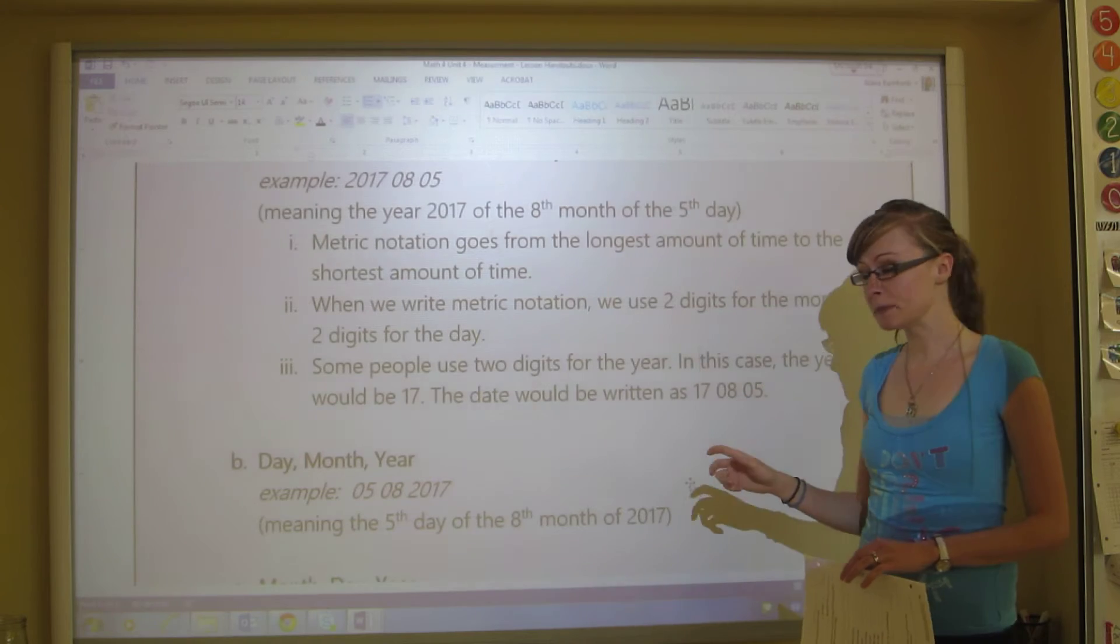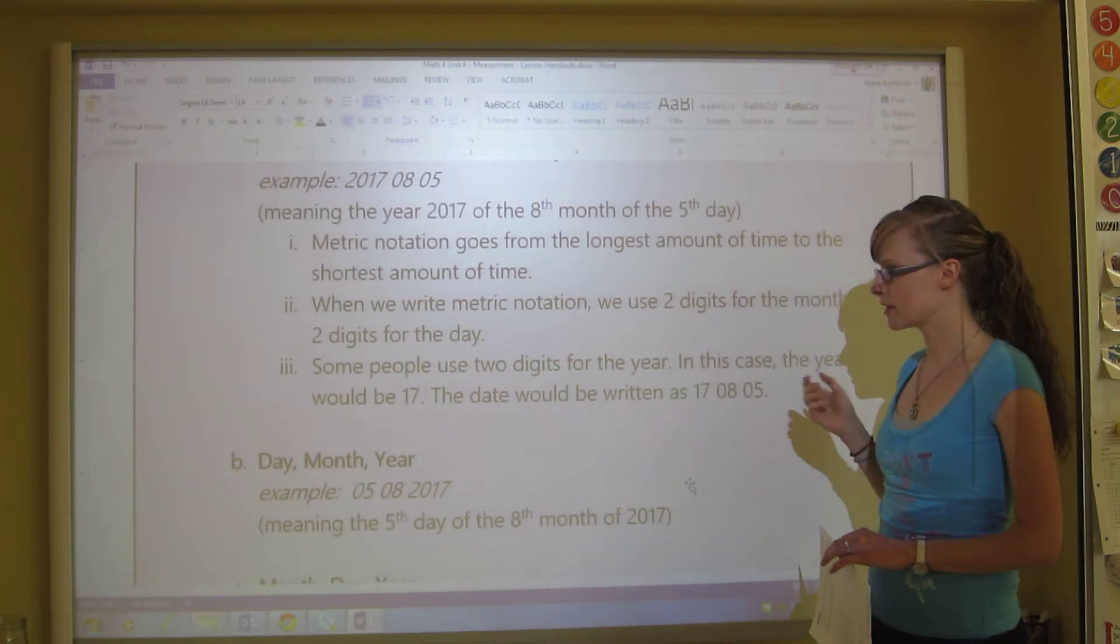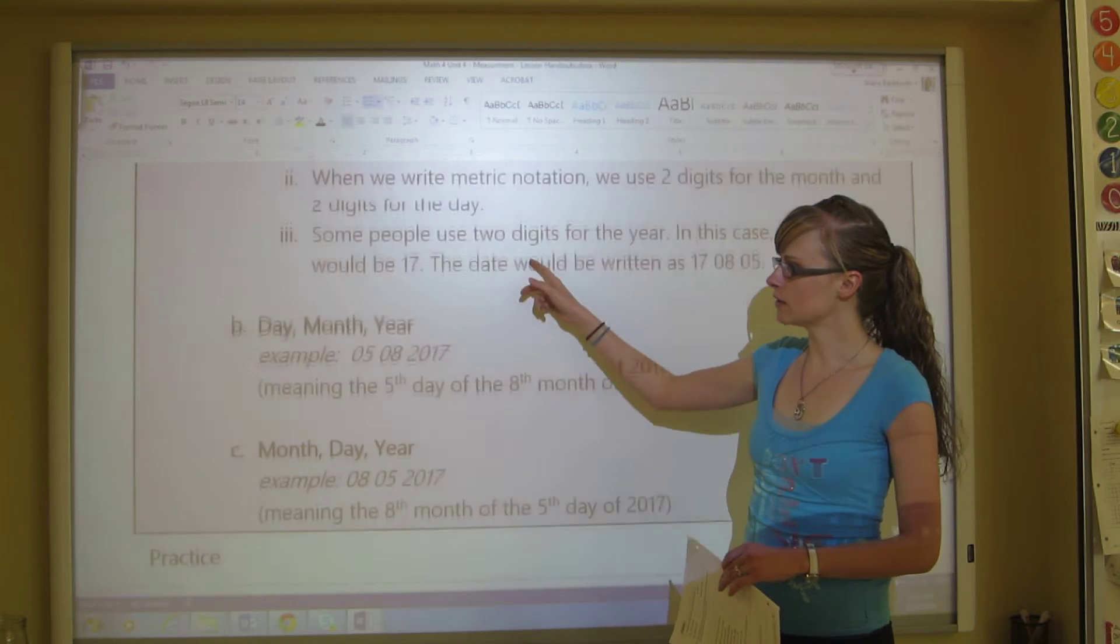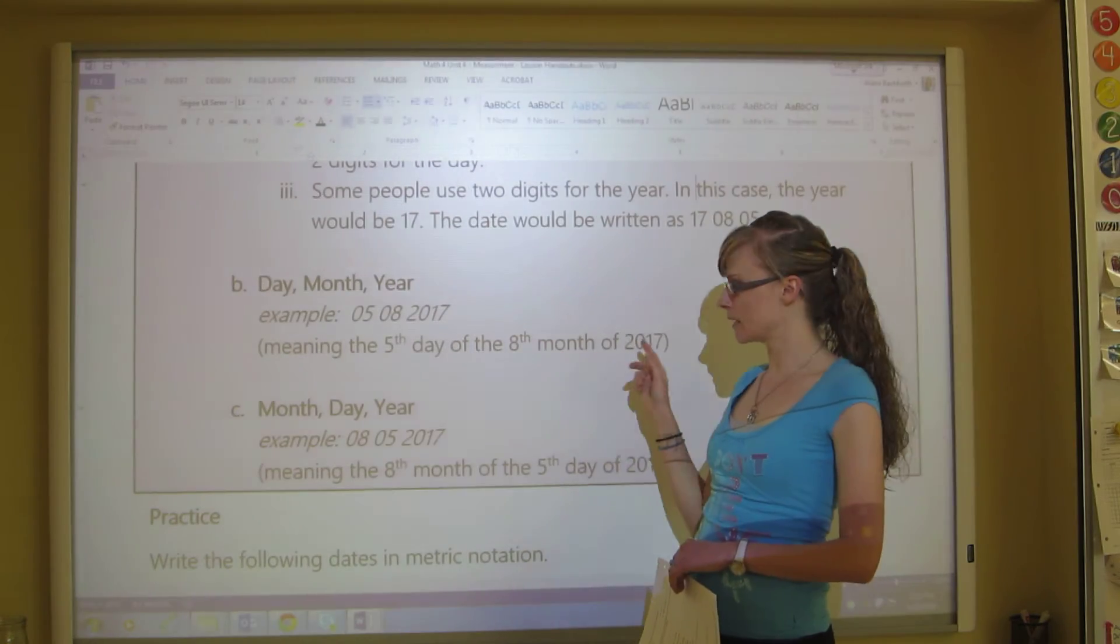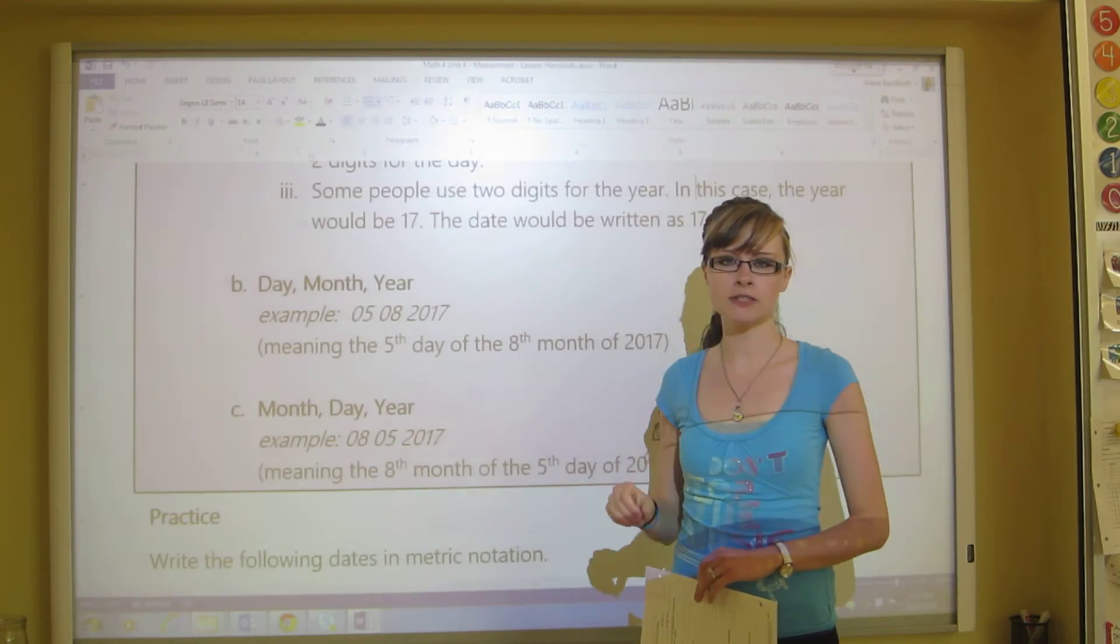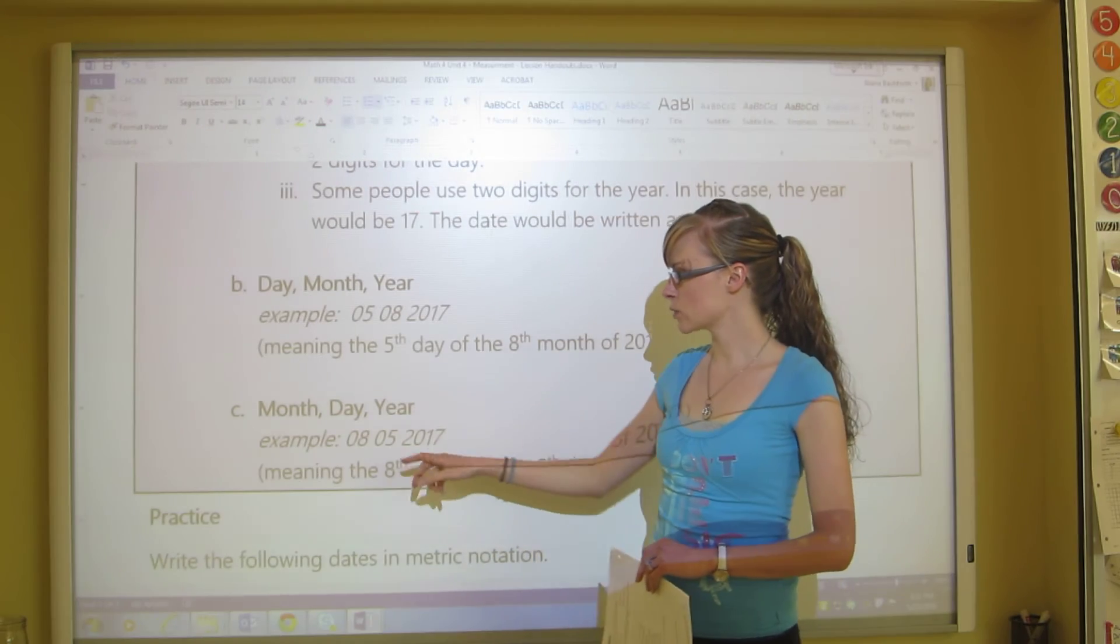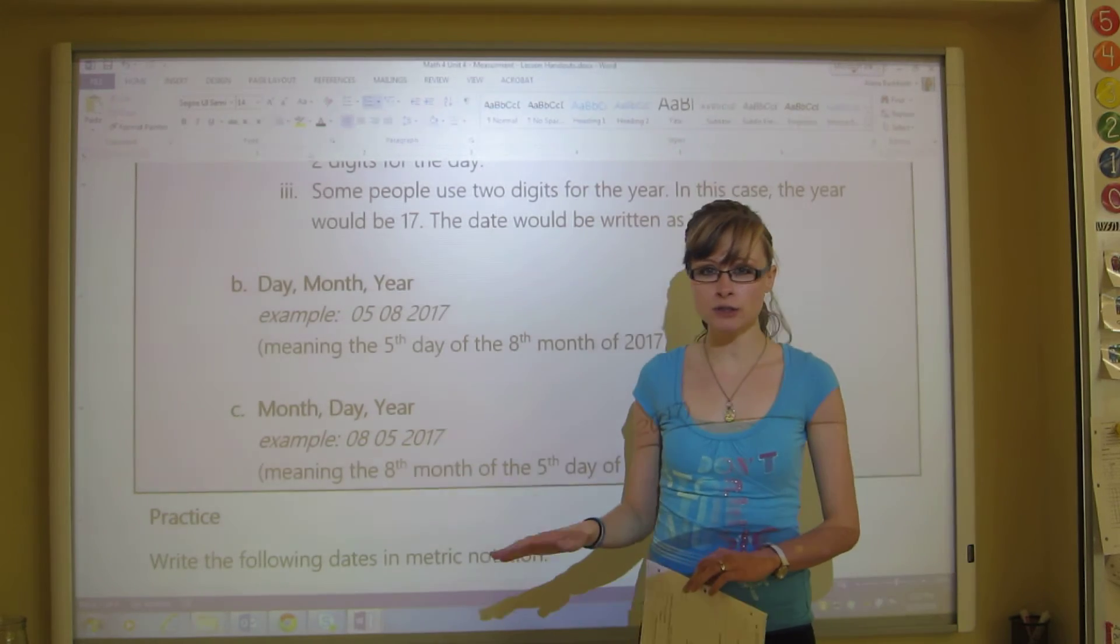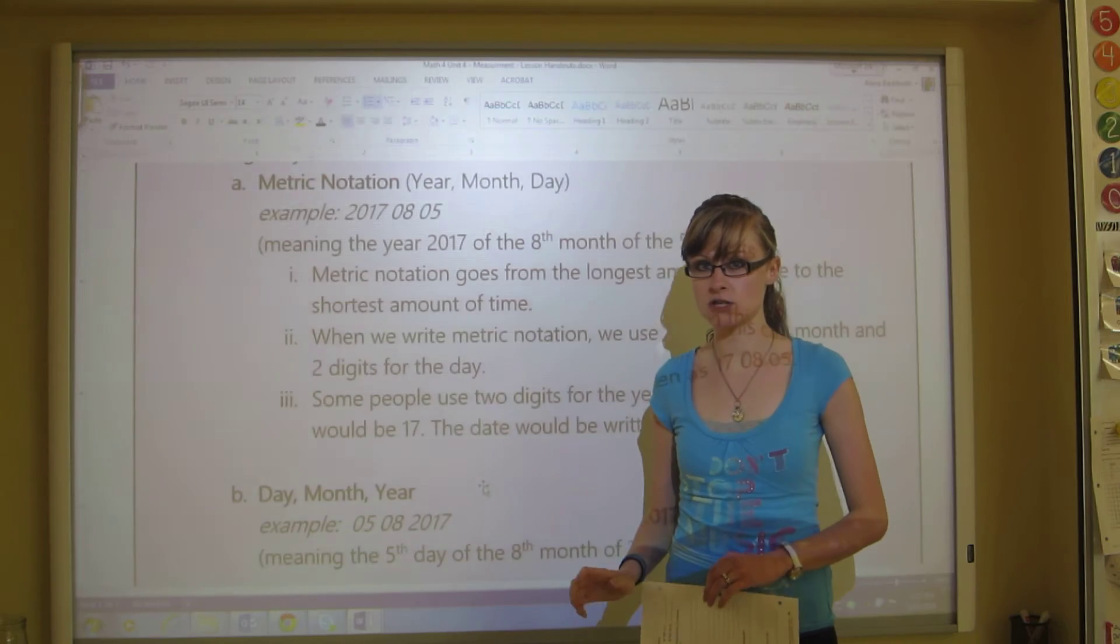And so in this case, the date would be written as 17 08 05. Now this one's a little less specific because this could technically be 1917 of August 5th, but this is just another way that you could write it. So this is the metric notation going year, month, day. You can also go day, month, year. So that would be the 5th of August, 2017, the 5th day of the 8th month of 2017. Or you could put the month first and then the day and then the year. And this one's quite common to use in Canada where we are. So if we're gonna use numbers, this technically is the most common way that we would use it. But this one has a special name called metric notation.